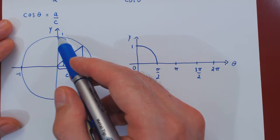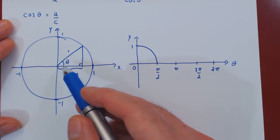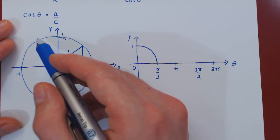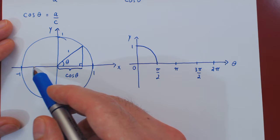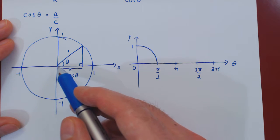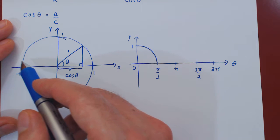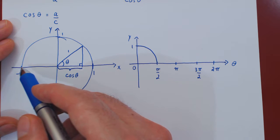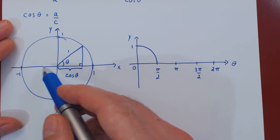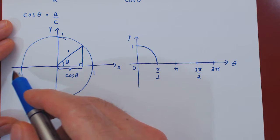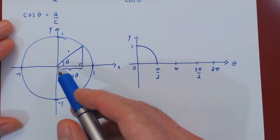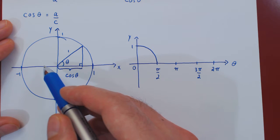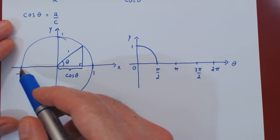As we go from π/2 to π, the base starts at 0. Imagining the triangle now on the left side, the base becomes a little bigger but negative. With an even larger theta, the base is even larger and negative, until we reach π, where the triangle again becomes a horizontal line segment and the base is negative 1. So as the angle increases from π/2 to π, the base goes from 0 all the way down to negative 1.